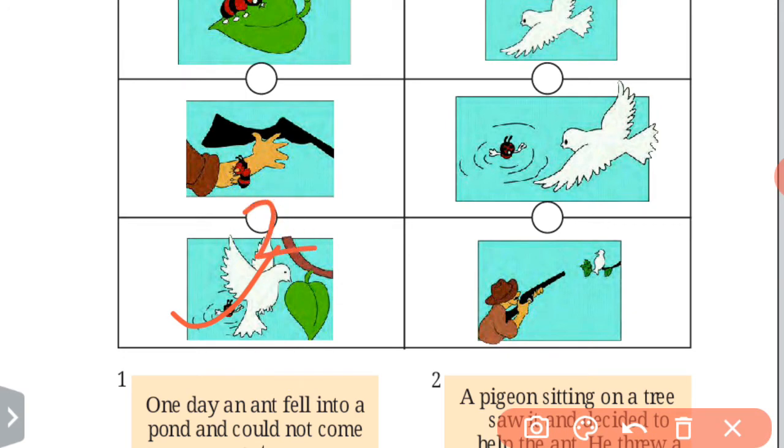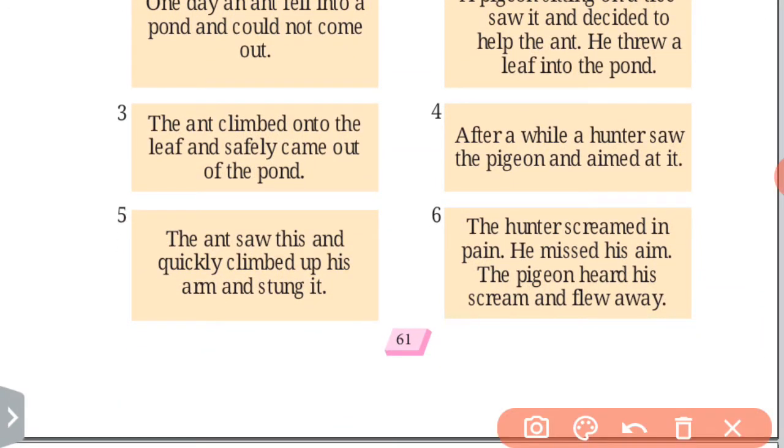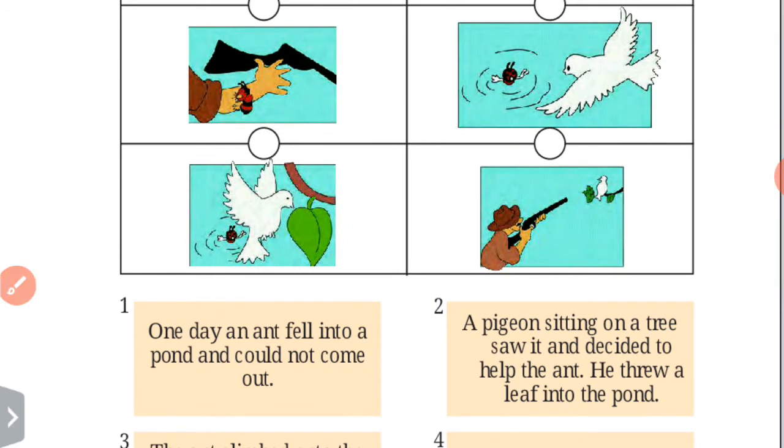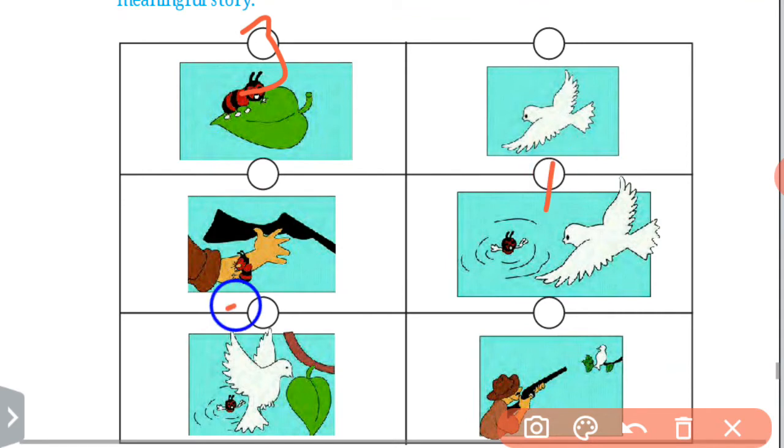Now third one is the ant climbed onto the leaf and safely came out of the pond. So with the help of the leaf, the ant comes out of the river here. So this is point 3. So 1, 2, and this is number 3.